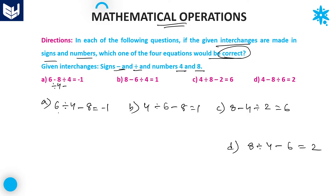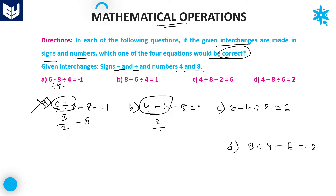Now we verify one by one. Option A: six divided by four is three over two, and three over two minus eight does not give minus one — so option A is eliminated. Option B: four divided by six is two over three, and two over three minus eight is not equal to one — so option B is also eliminated.